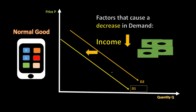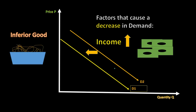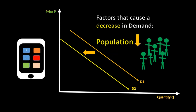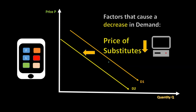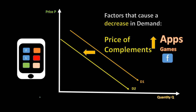Of course the reverse is true for everything we've discussed. If the population's income goes down, for a normal good that would shift the demand curve inward to the left, meaning quantity demanded would be less at any given price. For an inferior good, if income goes up that would actually shift the demand curve inward. If the population decreases, the demand curve shifts inward. If the price of substitutes like computers goes down, people might buy more computers and fewer tablets, shifting the demand curve for tablets to the left. And if the price of complements such as apps goes up, that could shift the demand for tablets to the left as well.